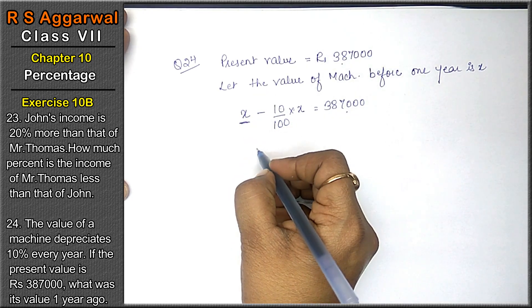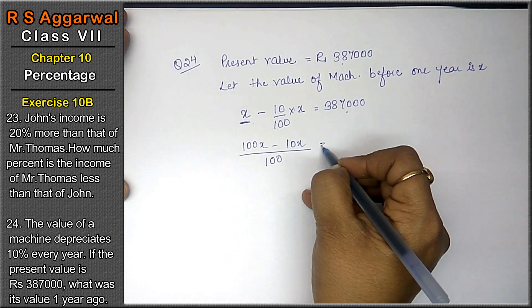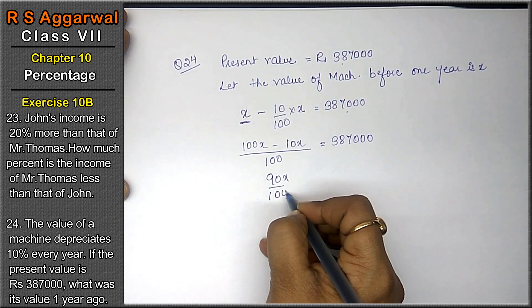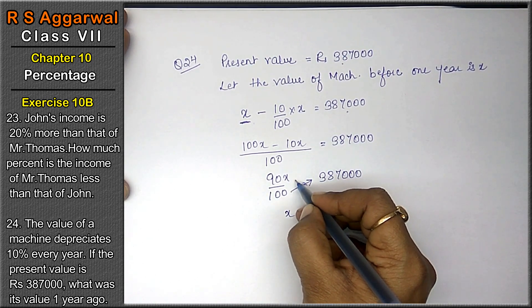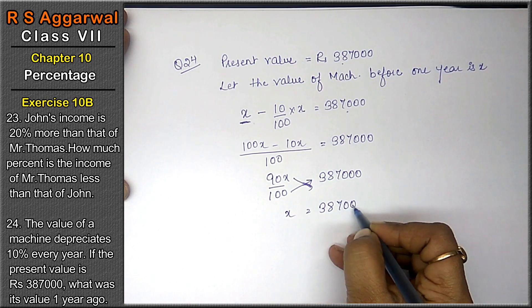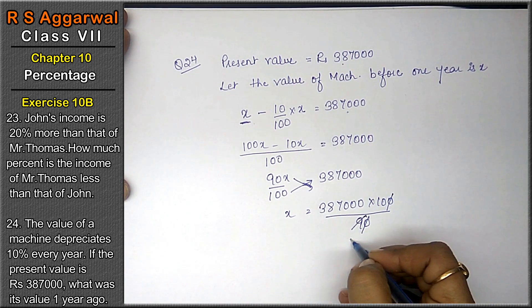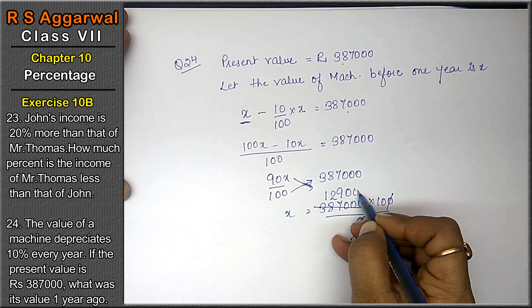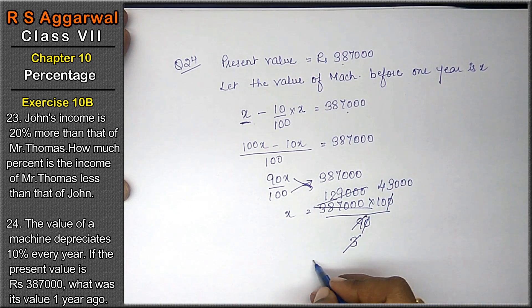So x minus 10% of x equals 387,000. Taking LCM: 100x minus 10x upon 100 equals 387,000. 90x upon 100 equals 387,000. So x equals 387,000 into 100 upon 90. Zero cancelled, 3 times 9, 3 times 3, 3 times 6. Answer will be Rs. 430,000.